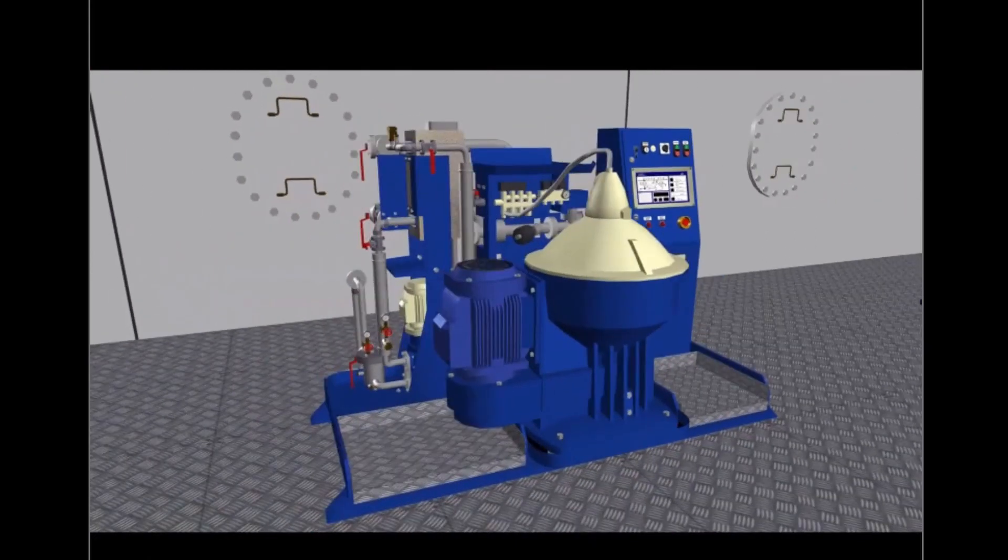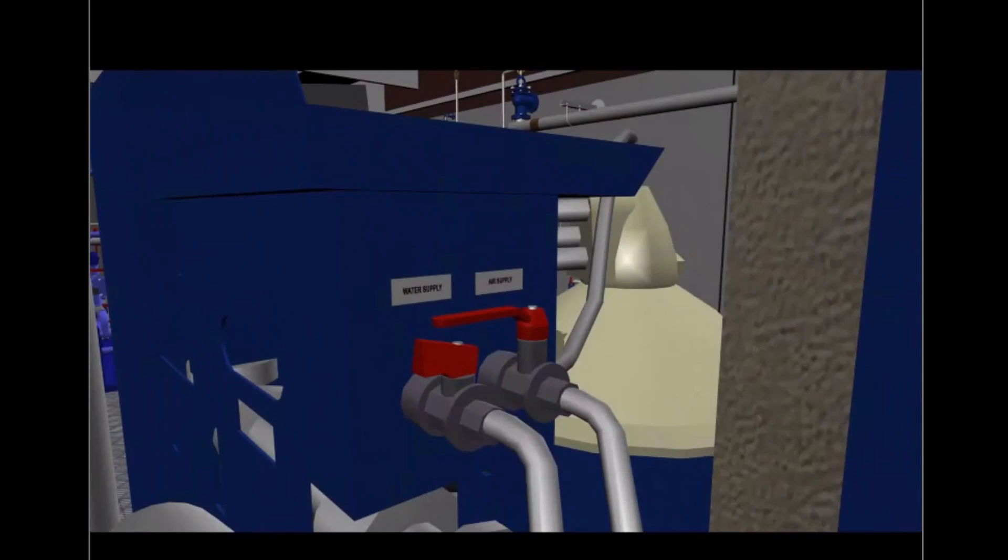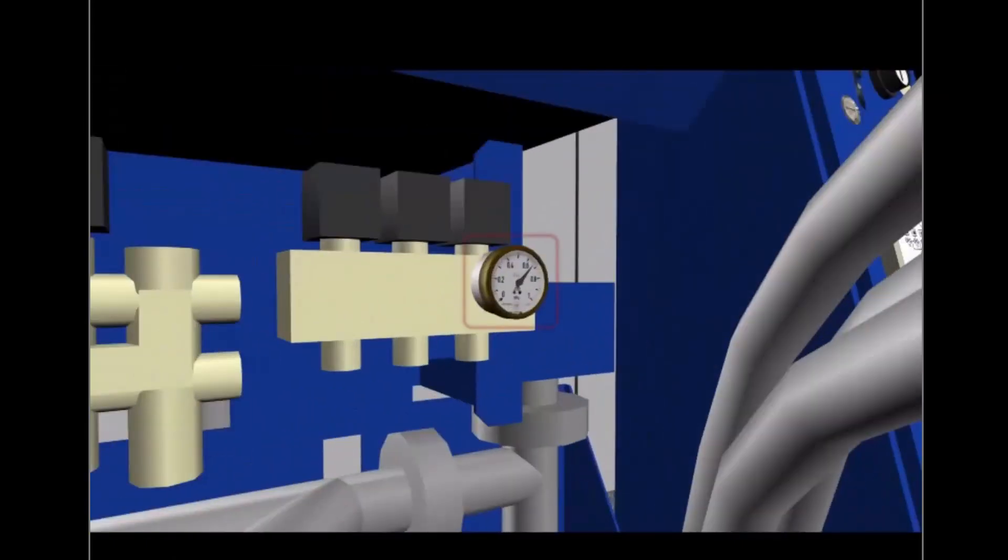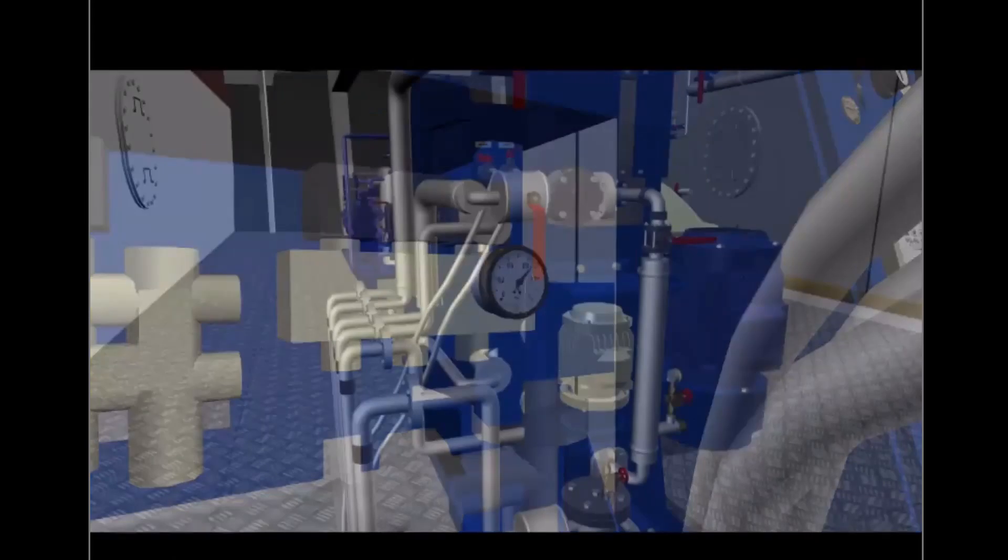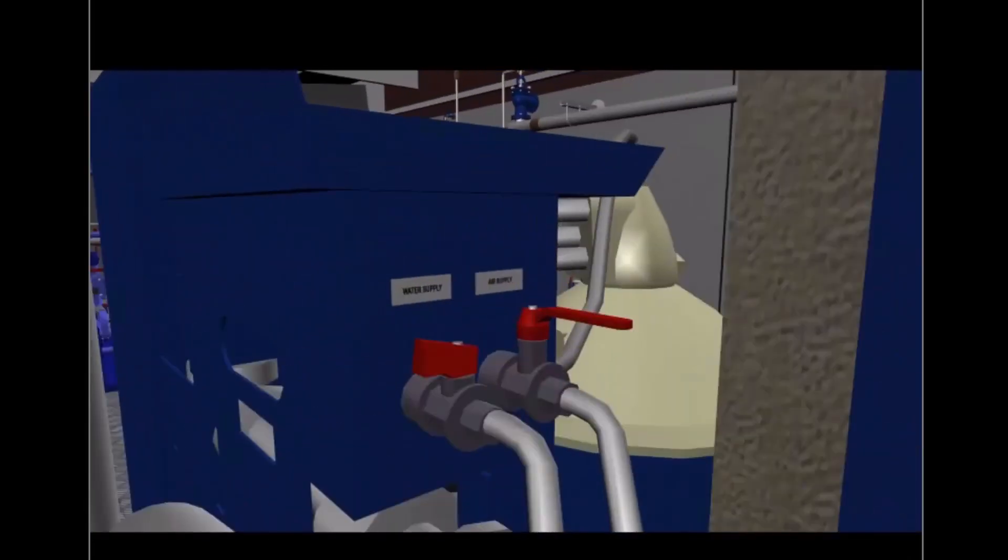Before start-up, make sure that the air supply to the air valve block is open and check that the air supply is correct. It should be between 5 and 7 bar, which is 0.5 to 0.7 MPa. Make sure that the water supply to the water valve block is open.